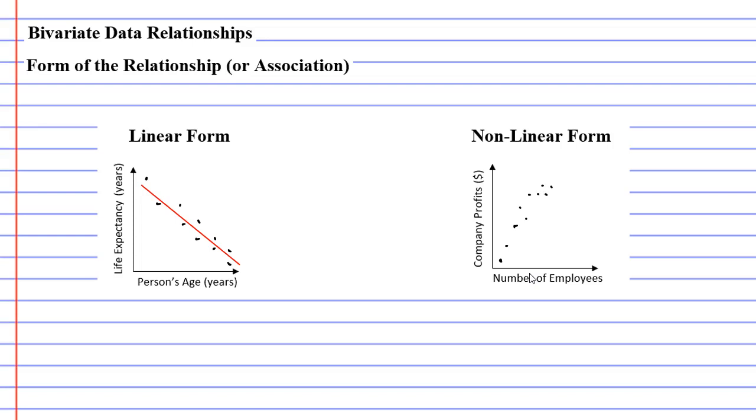But there comes a point where you have too many employees, and the costs of having these employees drag down the company profits like so. So we get this parabolic curve shape.